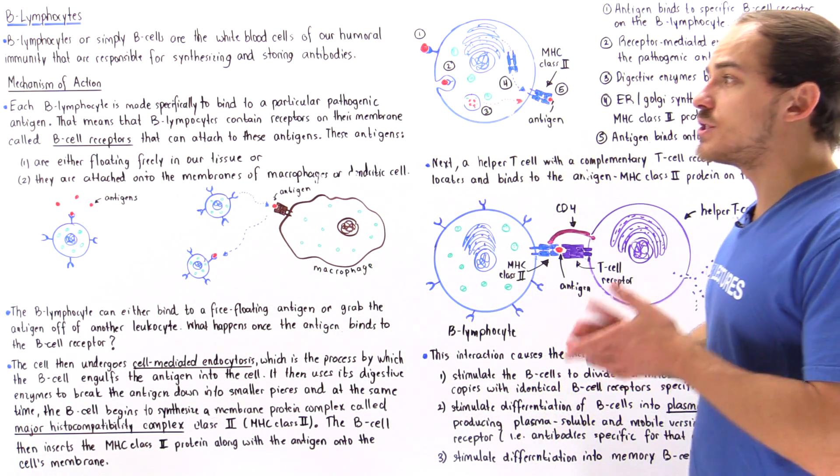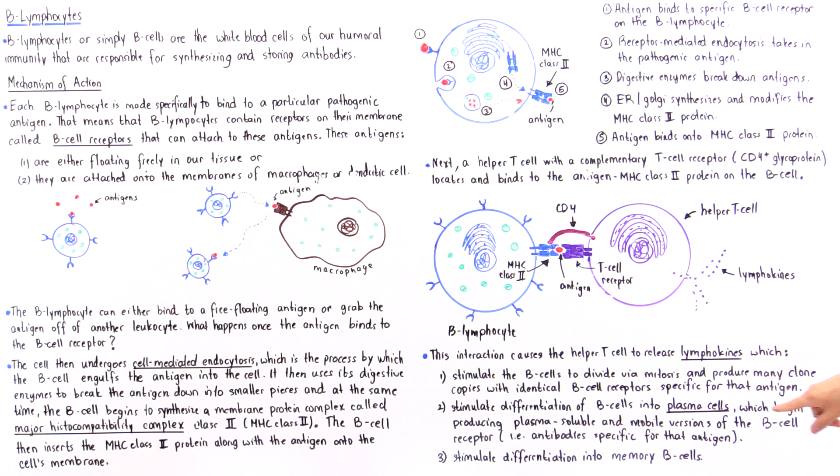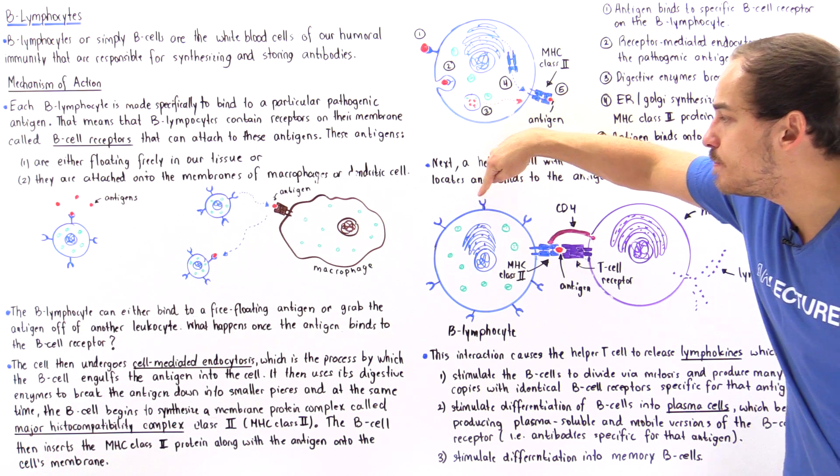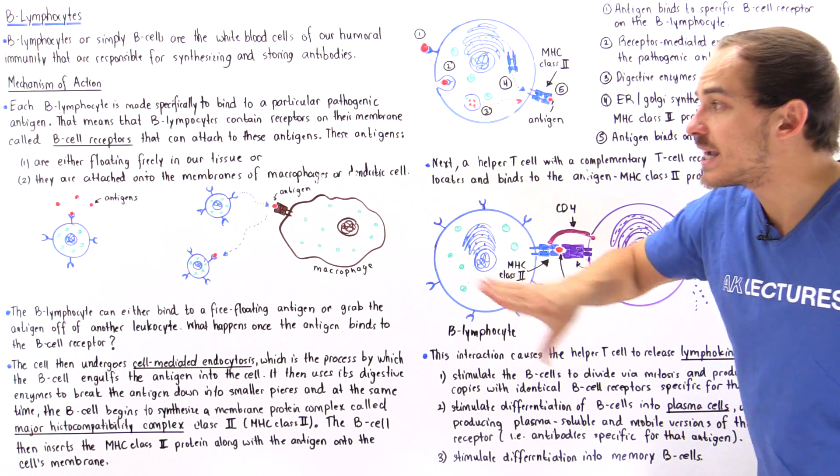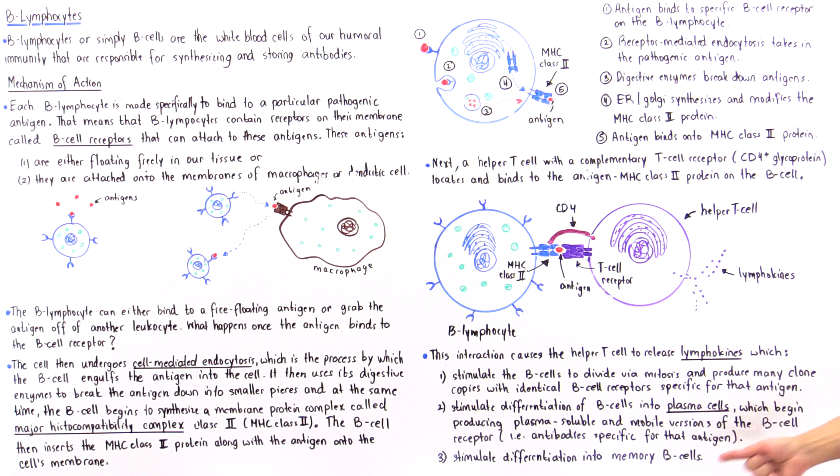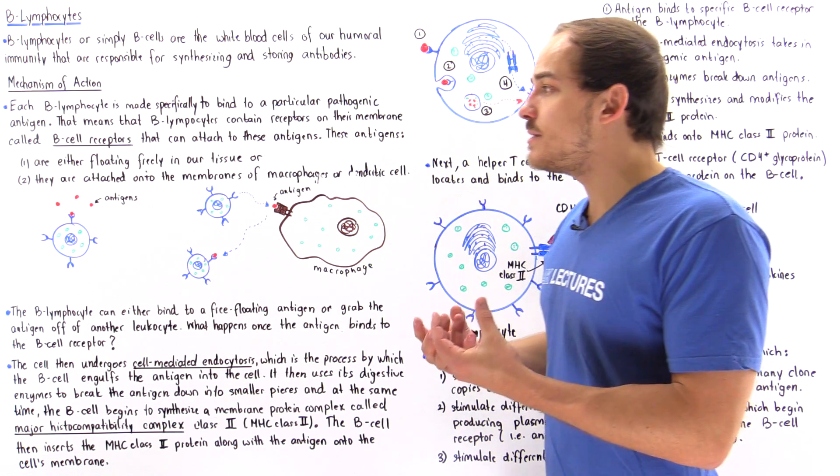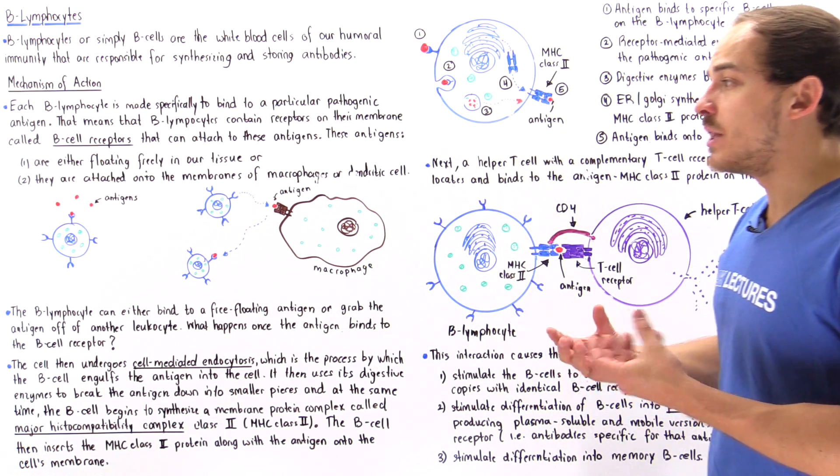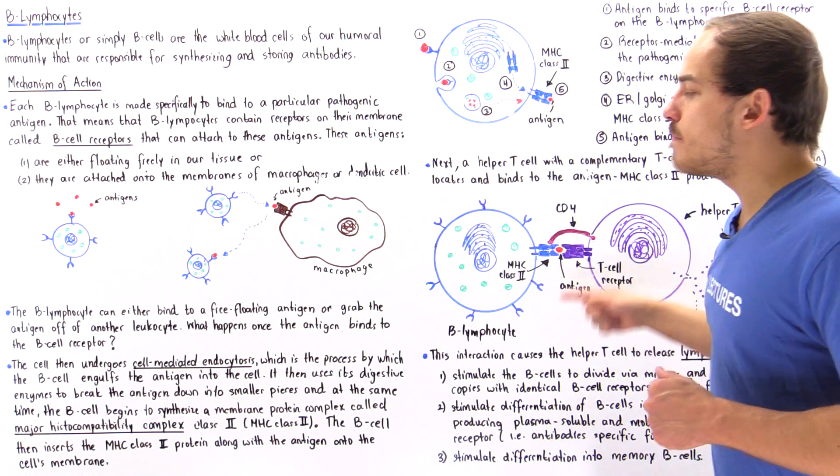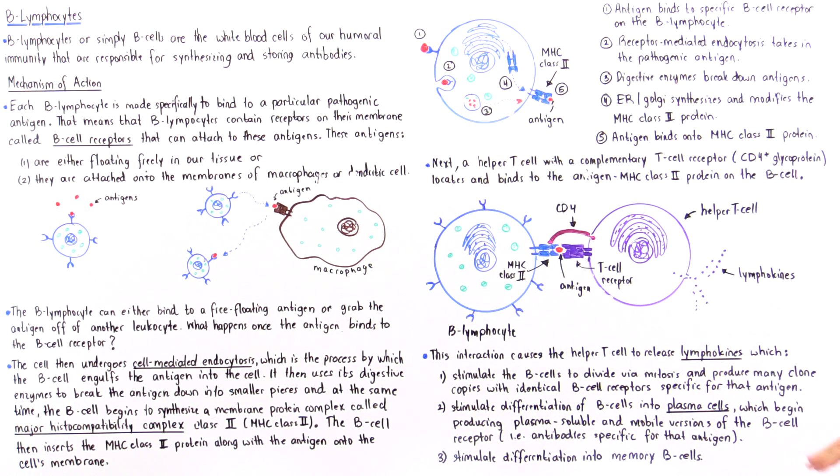These are specialized versions of B lymphocytes. Plasma cells produce soluble and mobile versions of B cell receptors that can bind onto antigens. These are the antibodies we spoke of earlier. Antibodies are soluble and mobile versions of the B cell receptors found on the B lymphocyte membrane.